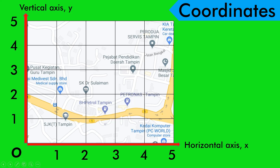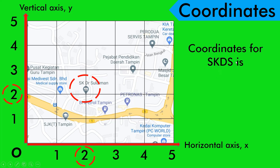Now we have to determine what is the coordinate for our school. Jadi sekarang kita nak tentukan apakah koordinat untuk sekolah kita SK Dato' Sulaiman. Kita tengok dekat paksi x, mewakili nombor 2. Dan di paksi y juga mewakili nombor 2. So the coordinates for SK Dato' Sulaiman is (2, 2). Jadi ini adalah cara penulisan koordinat — dimulai dengan kedudukan di paksi x diikuti dengan kedudukan di paksi y.